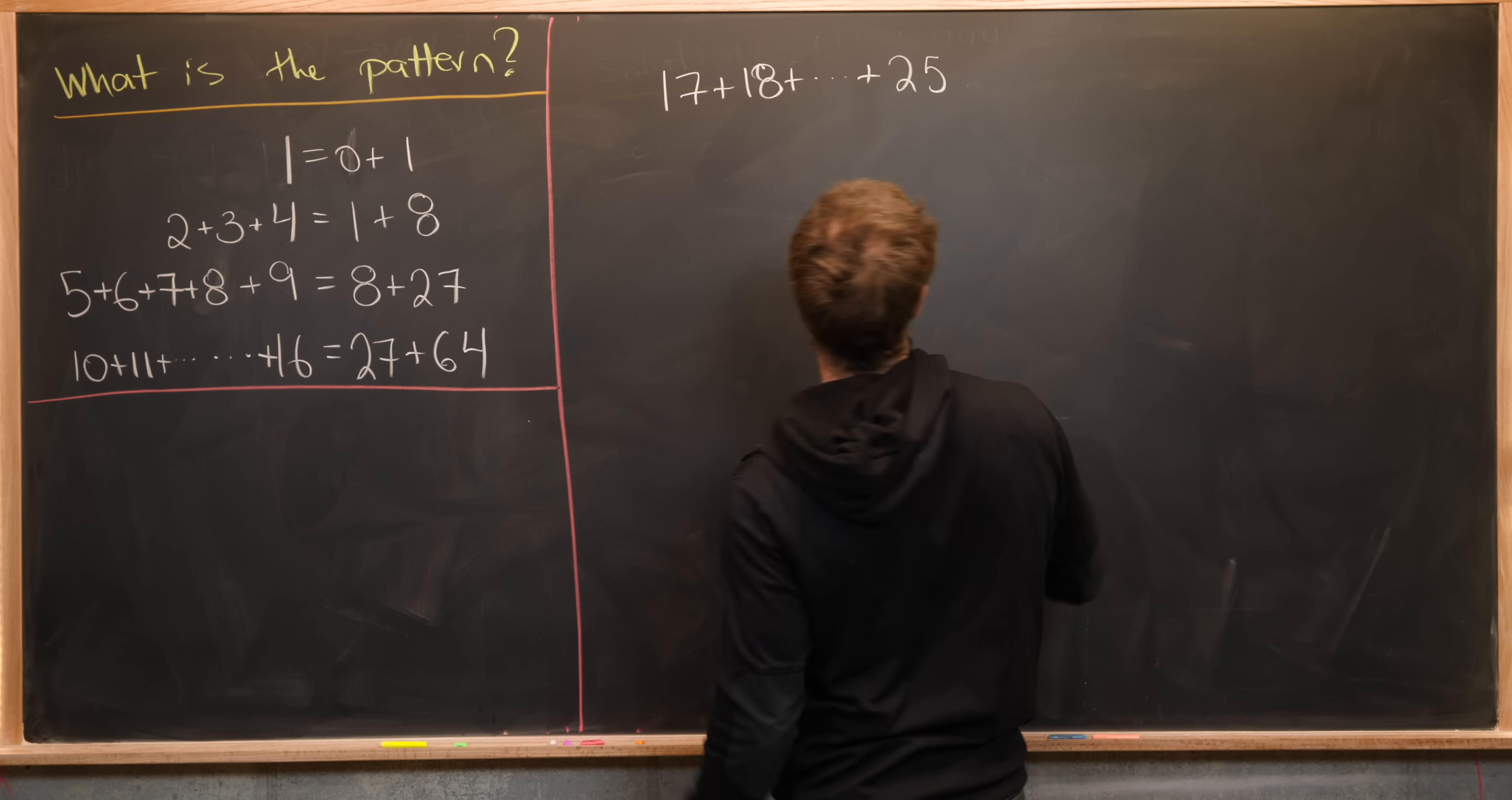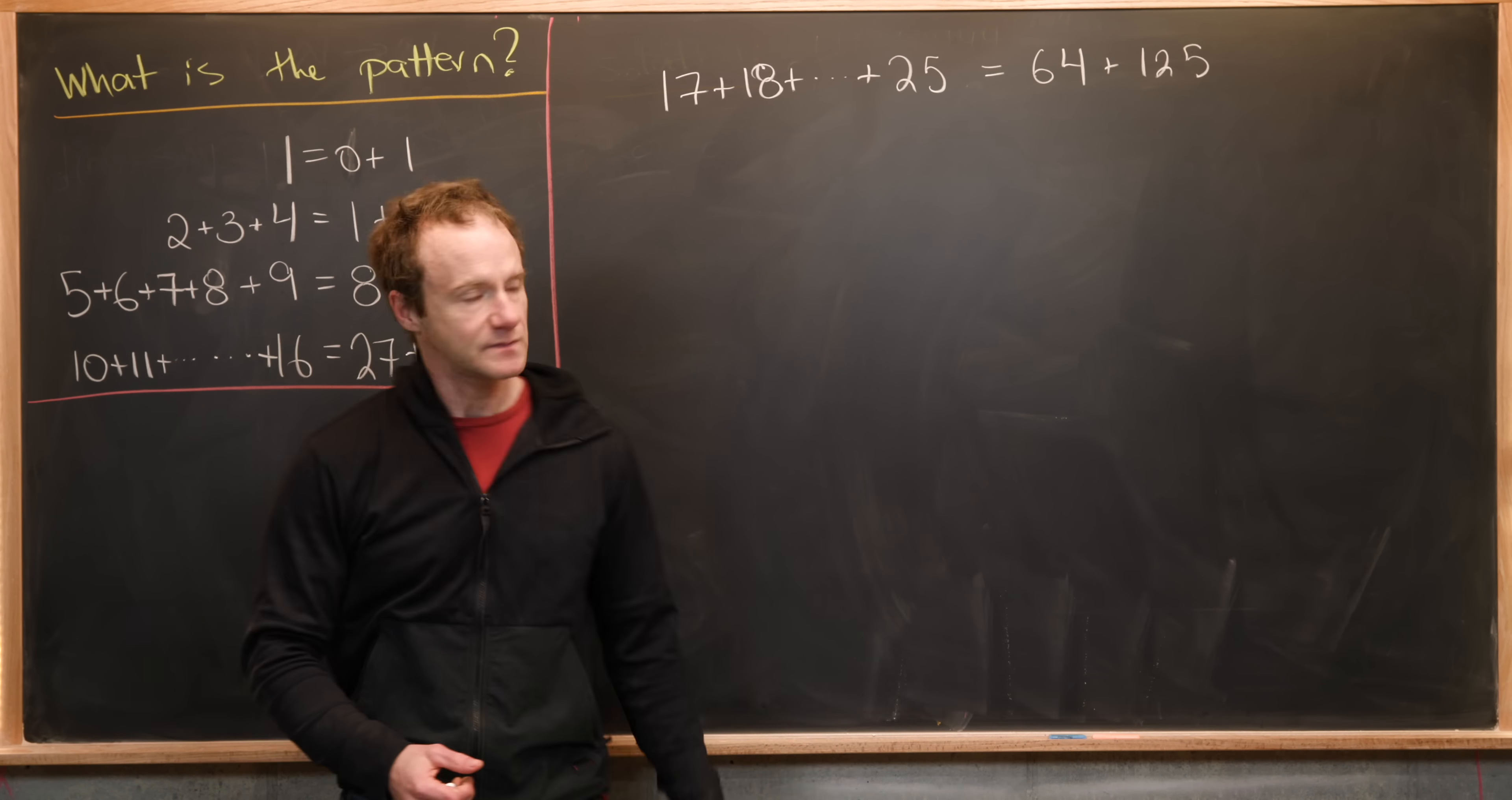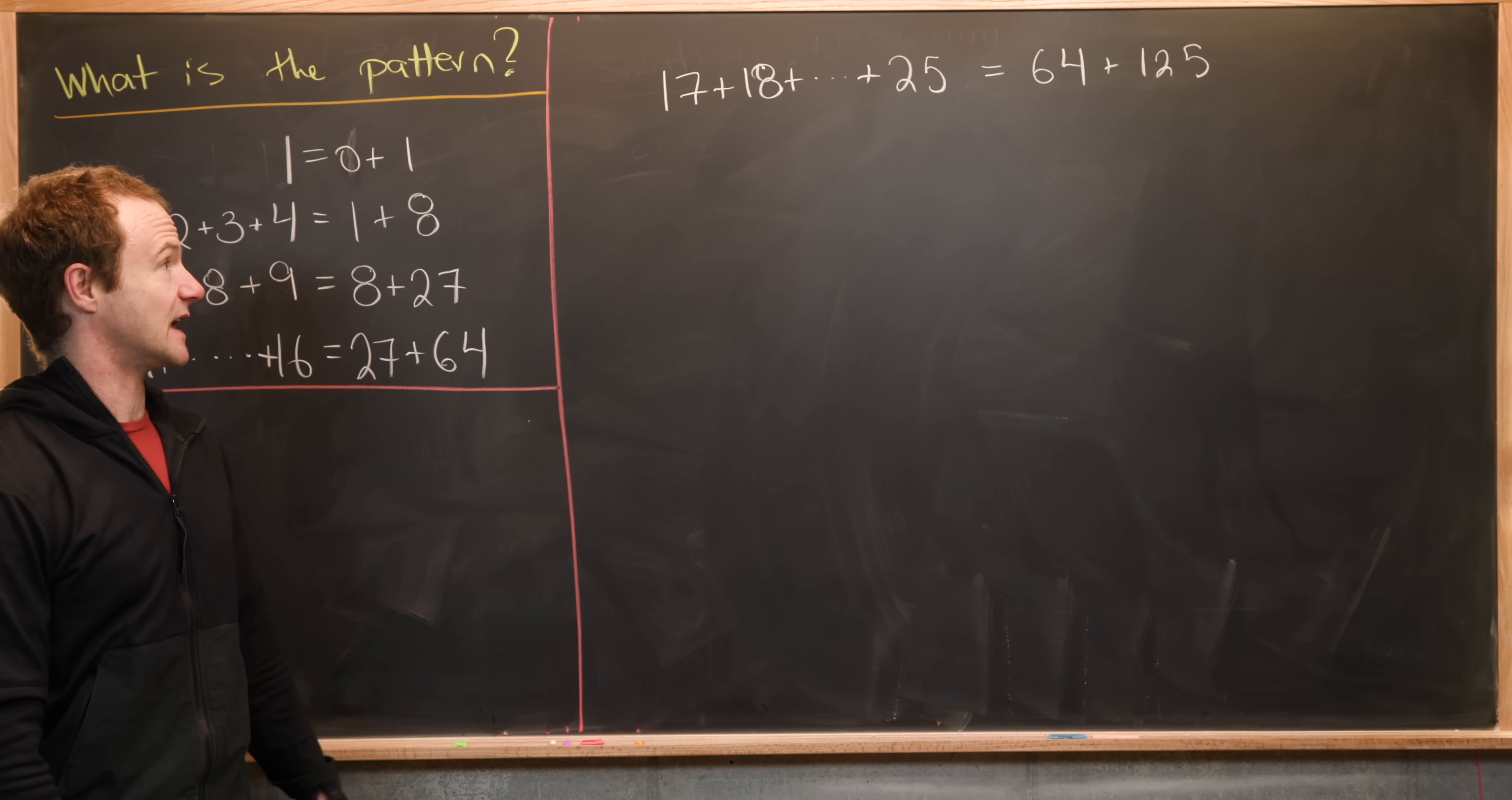So that tells us that maybe this should be 4 cubed, which is 64 plus 5 cubed, which is 125. Now you can maybe check that just by simple arithmetic and you'll see that this is actually the case.